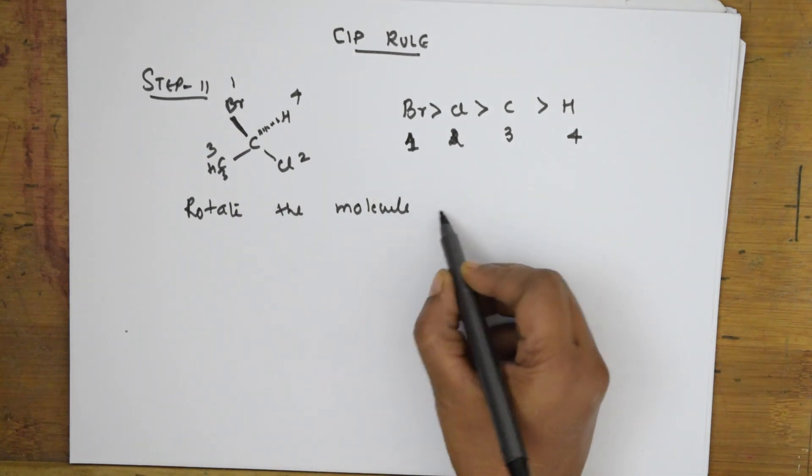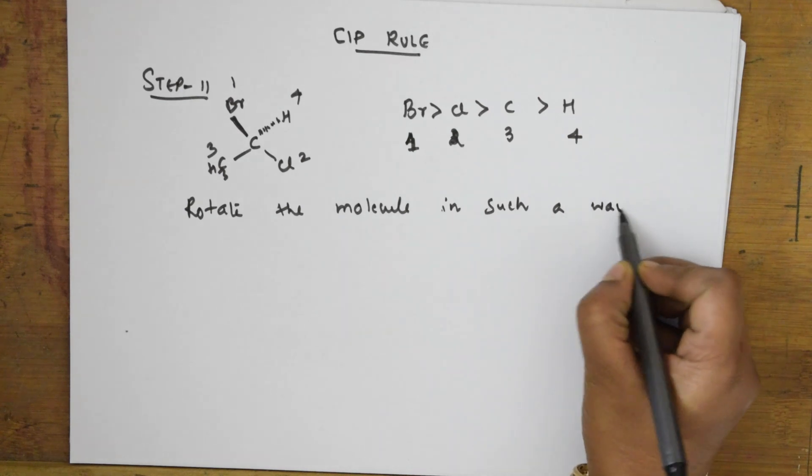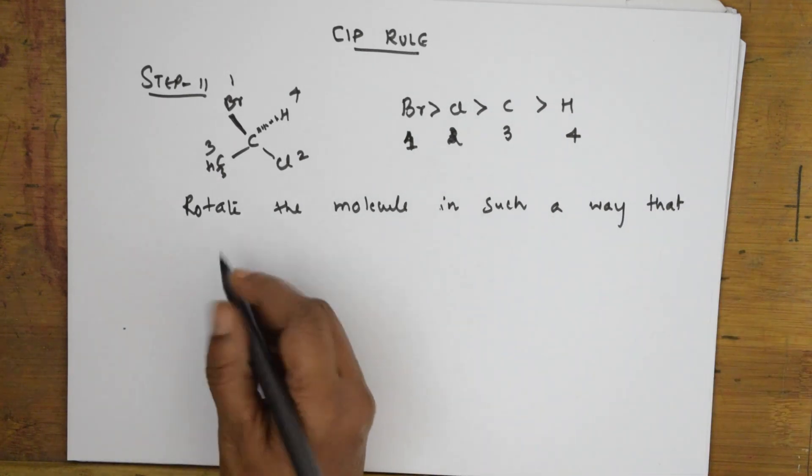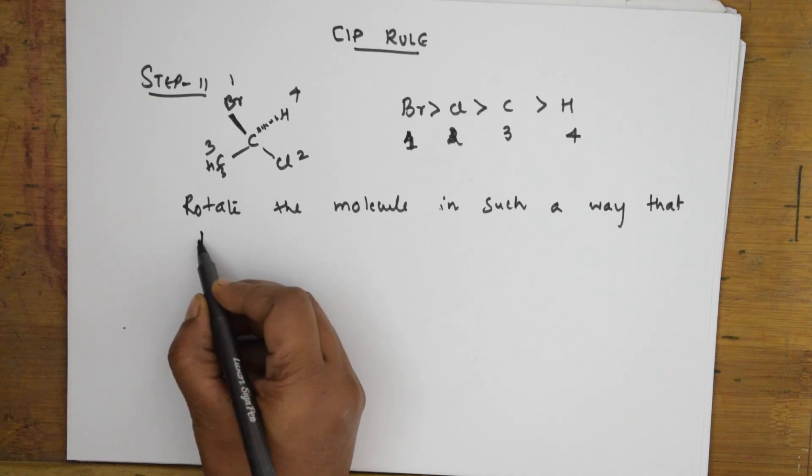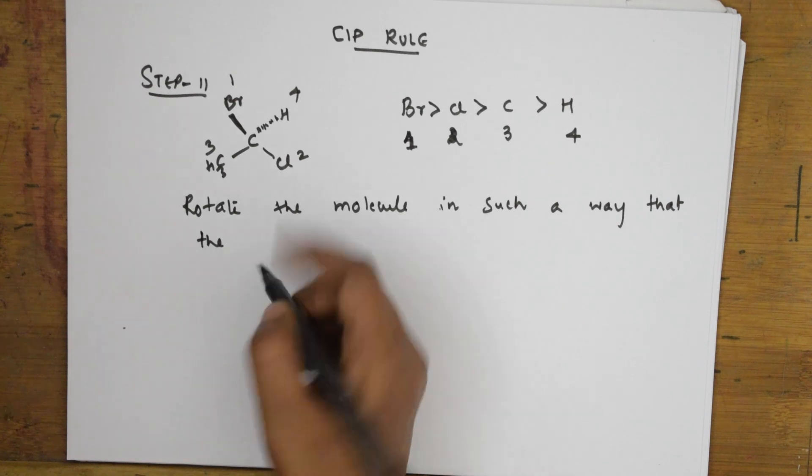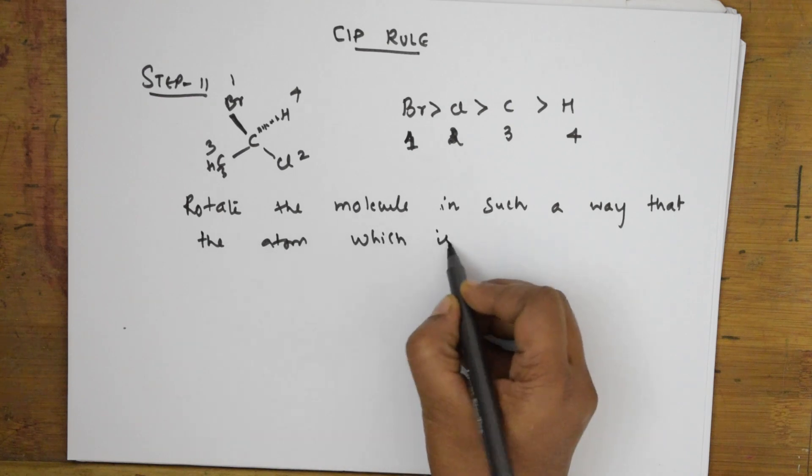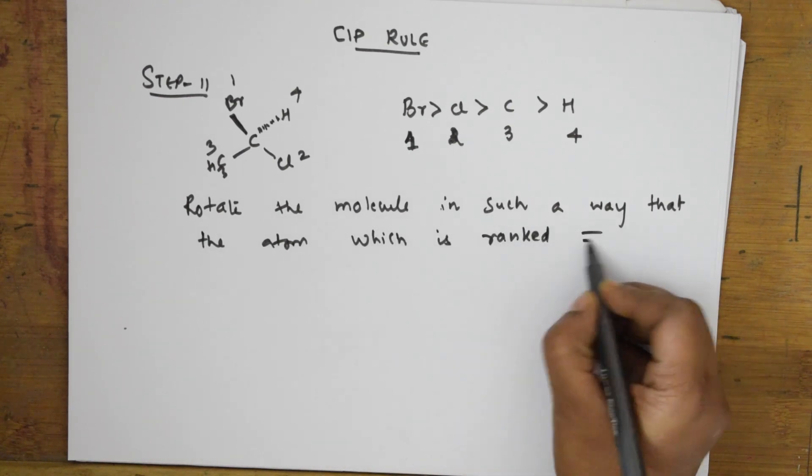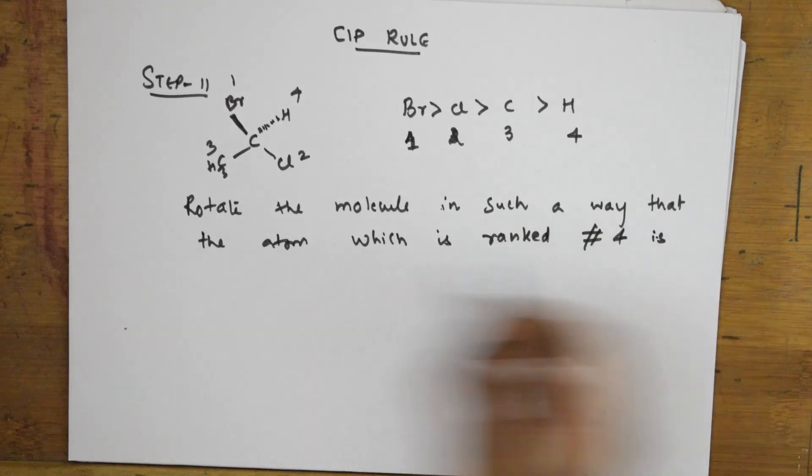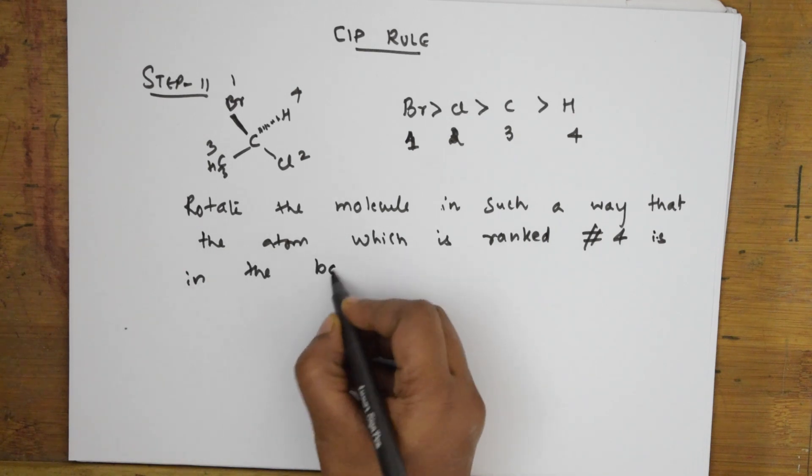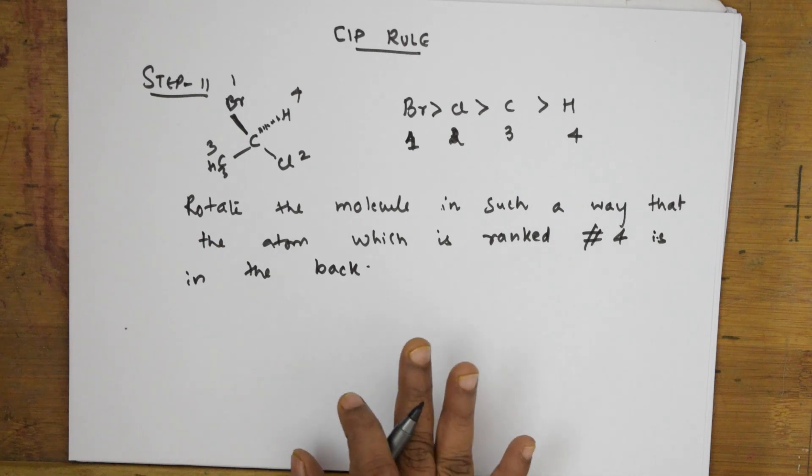I have a dash line; it will be at the back. So rotate the molecule in such a way that the atom which is ranked 4 is in the back.